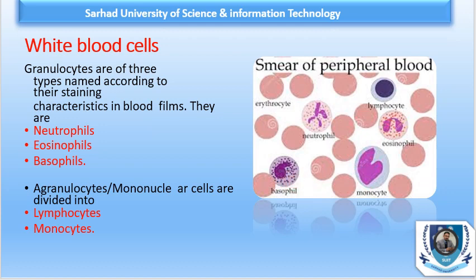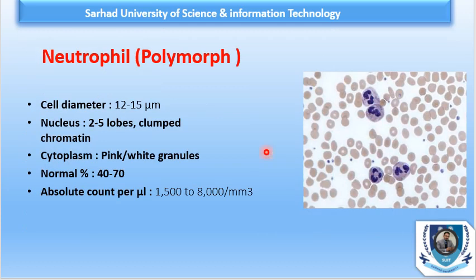The first cell type is the neutrophil. Looking at this image, these are all neutrophils. It has a diameter of 12 to 15 microns, 2 to 5 lobes, and clumped chromatin. The cytoplasm is pink to pinkish. Normally they are present on a peripheral blood smear at 40 to 70 percent.